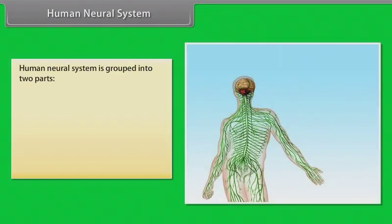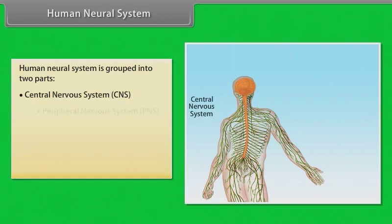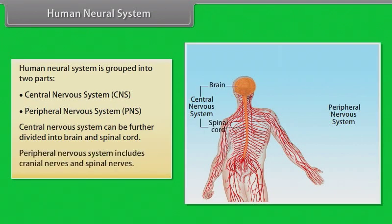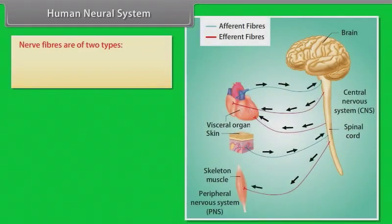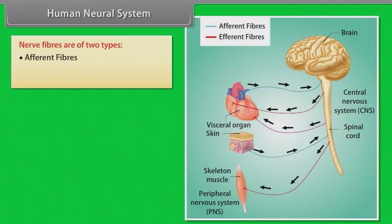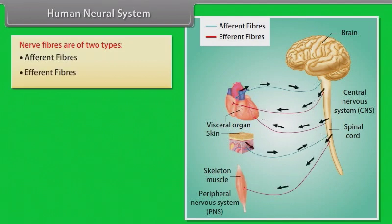The human neural system is grouped into two parts: the central nervous system and the peripheral nervous system. The central nervous system can be further divided into the brain and spinal cord. The peripheral nervous system includes cranial nerves and spinal nerves. Nerve fibers are of two types: afferent fibers and efferent fibers.